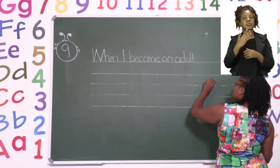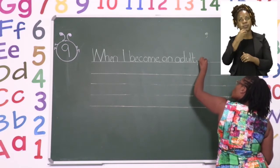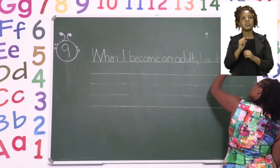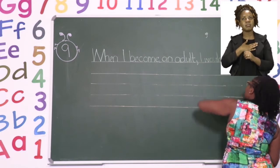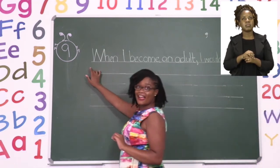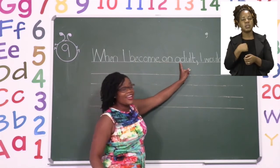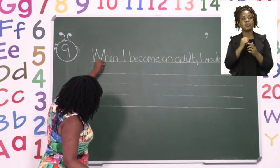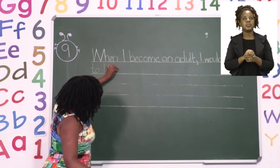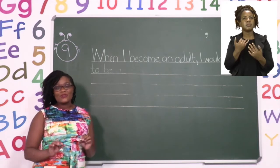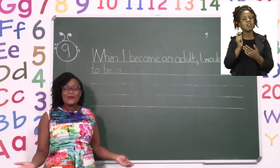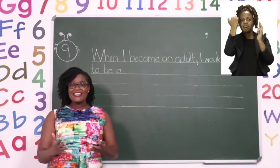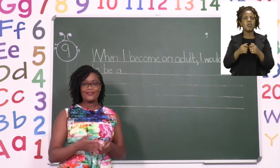'When I become an adult, comma, I would like' — now, as you can see, I have no more space to write anything on the line, so I go to the next line. 'When I become an adult, I would like to be a.' This is the part where you write what you want to be when you grow up. You can be a teacher, a lawyer, an accountant, an engineer, a pilot, a minister, or the president.